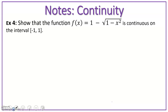Example 4. We have a function f of x equals 1 minus the square root of 1 minus x squared, which is continuous on the closed interval negative 1 to 1. In order to prove this, we need to first prove that f of a, where a is in this closed interval, is defined for all values in this. So let's let a be a value that belongs to the interval negative 1 to 1.